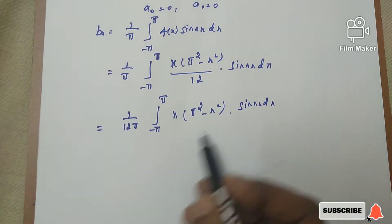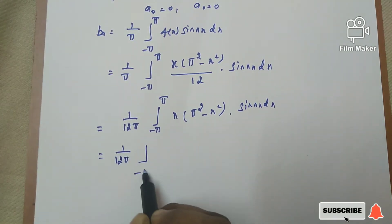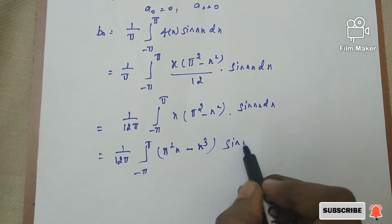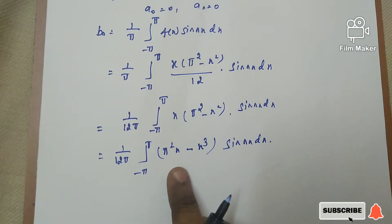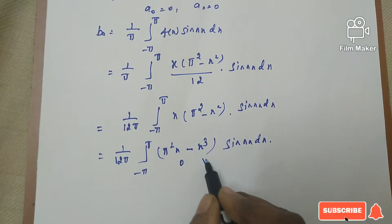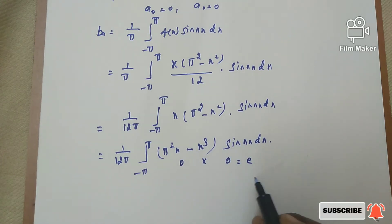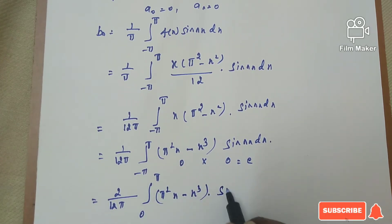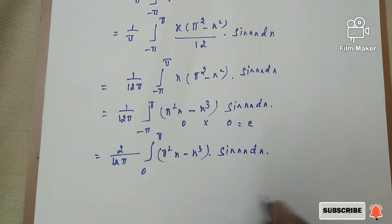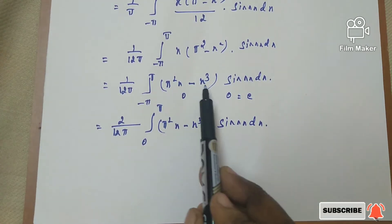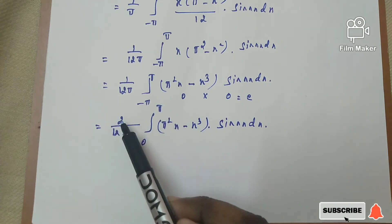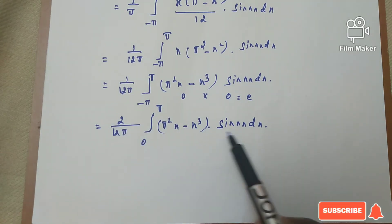So we have (1/12π) integral from -π to π of x(π² - x²) sin(nx) dx. Expanding: (1/12π) integral from -π to π of (π²x - x³) sin(nx) dx. Now the given f(x) is an odd function and sin is also an odd function. Odd times odd equals an even function. Because of that property, this can be written as (2/π) integral from 0 to π of (π²x - x³) sin(nx) dx.